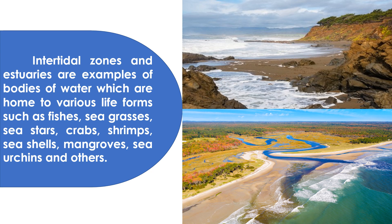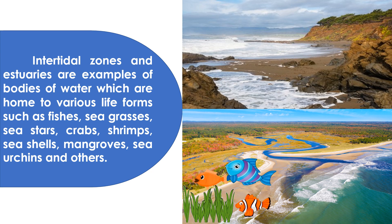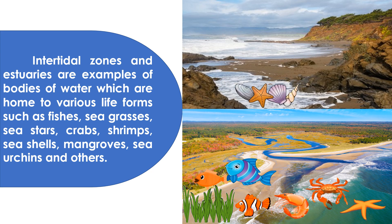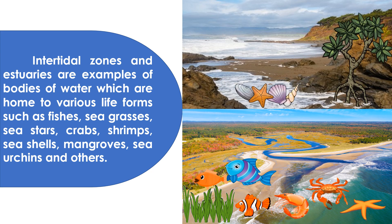Intertidal zones and estuaries are examples of bodies of water which are home to various life forms such as fishes, seagrasses, sea stars, crabs, shrimps, seashells, mangroves, sea urchins, and others.